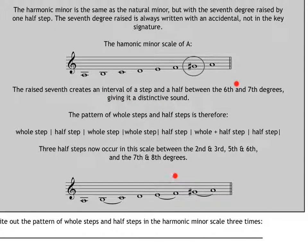The pattern of whole and half steps, therefore, is right here. Whole, half, whole. Whole, half. Whole and half. Half. Or one and a half steps. However you want to think of it. Another way to think about it is that three half steps now occur in this scale. Between notes two and three. Just like the minor scale. The natural minor scale. Between notes five and six. Just like the natural minor scale. And now we add another half step. Between the seventh and eighth scale degrees. So, in an A minor scale, as you can see here. Half step between B and C. Half step between E and F. And a half step between G sharp and A.